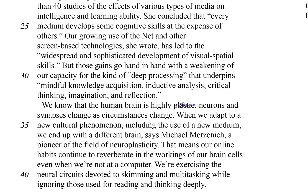I'm just going to say changeable. You don't have to write in your test — I'm just writing it here so that it's easier to see my thought process. The reason I said changeable is because the word change is staring us in the face in the rest of the sentence. Neurons and synapses change. Circumstances change. And we know that the human brain is highly changeable — neurons and synapses change as circumstances change.